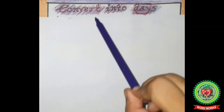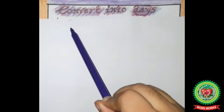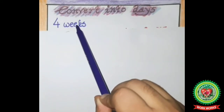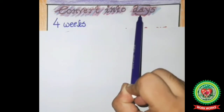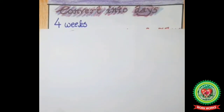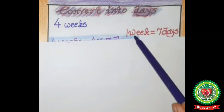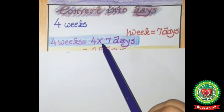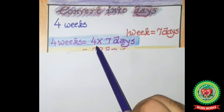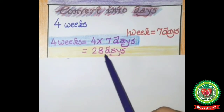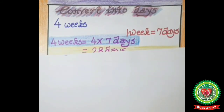To understand this topic, let's take some examples. Convert into days: four weeks. The statement is given in weeks and we will convert weeks into days. In one week, how many days are there? Yes, there are seven days in one week. So in four weeks there will be four multiplied by seven days. Four sevens are 28, that means in four weeks there are 28 days.